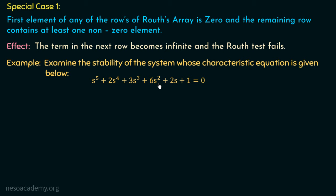s⁵, s⁴, s³, s², s¹, and s⁰ — the constant term — are all present. So all powers of s are present, and hence this characteristic polynomial satisfies both necessary conditions of stability. We can say this characteristic polynomial is a Hurwitz polynomial. In order to comment on the stability, we need to perform the Routh's test, so let us now move on to the solution.